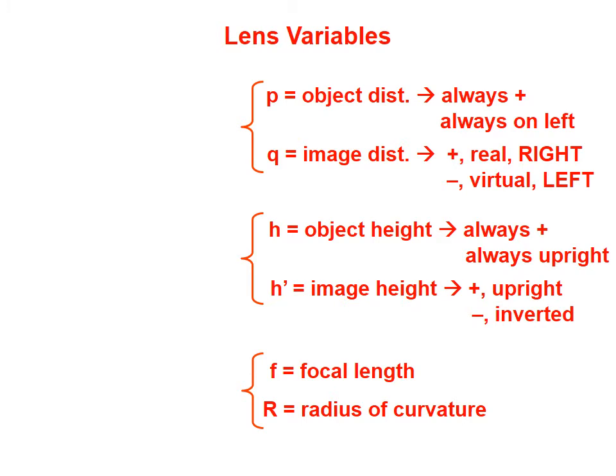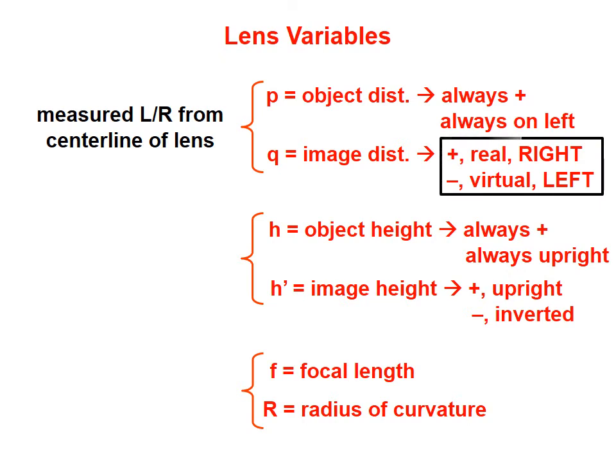Let's go through a few of the variables that we will run into with regard to lenses, especially when we get to using equations to calculate values. P is the object distance; Q is the image distance. These are measured left to right relative to the center line of the lens. In these lessons, the object distance P will always be positive and will always be on the left. As you might have run into with mirrors, positive Qs are real images and negative Qs are virtual images. However, for lenses, real images will appear on the right side of the lens and virtual images will appear on the left.